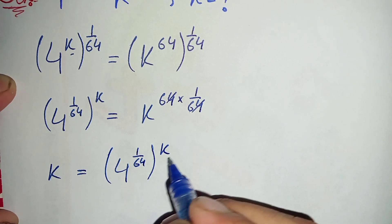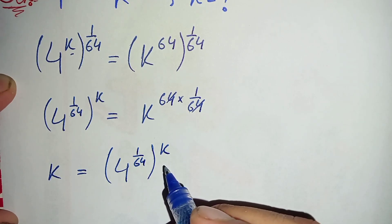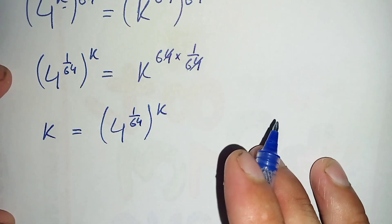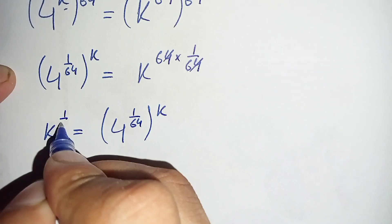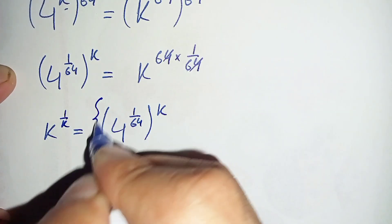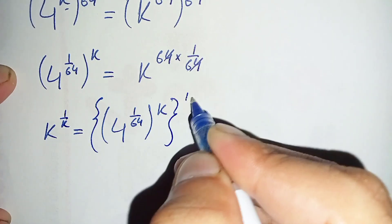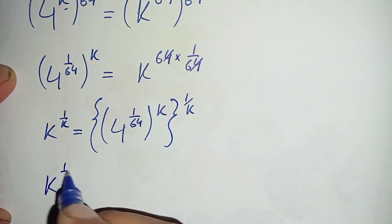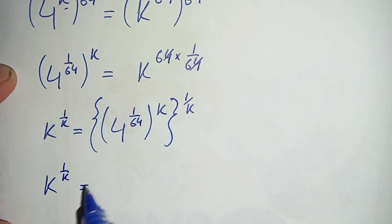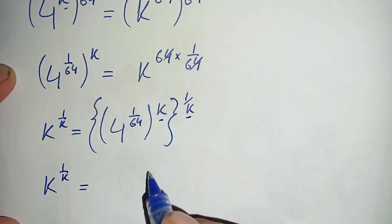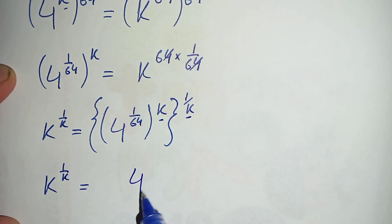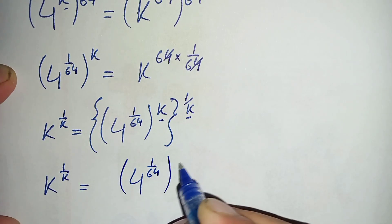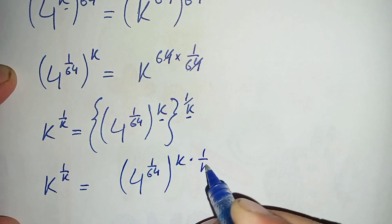Now we will try to eliminate k from the right hand side. For that, we will take 1 over k in the power on both sides. The left hand side becomes k raised to power 1 over k, and on the right hand side we multiply the two powers: 4 raised to power 1 over 64, all raised to power k times 1 over k.